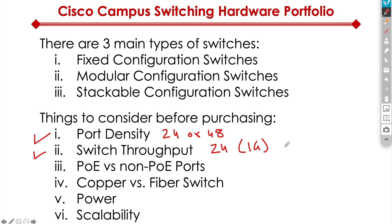Typically, that's not the case in a campus environment. You don't need wire-speed switches there because they end up becoming very expensive. Wire speed switches with no contention ratio are typically used in a data center environment. In campus environments, an 8-to-1 ratio is very common, and you'll also see 4-to-1 or 16-to-1 type ratios.